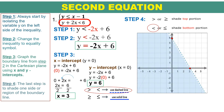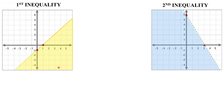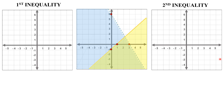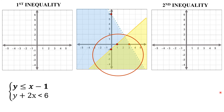Now we're done graphing the two inequalities. This is the graph of the first inequality, and this one is for the second inequality. Let us now combine these two graphs in one Cartesian plane. The overlapping shaded part of this graph is here. It means that all the points in this area are the solution of this system of linear inequality. We will choose a point — for example, the point with x-coordinate positive 2 and y-coordinate negative 1.